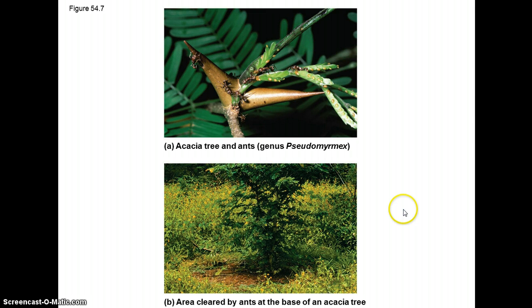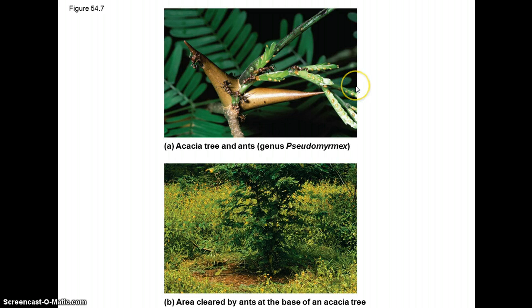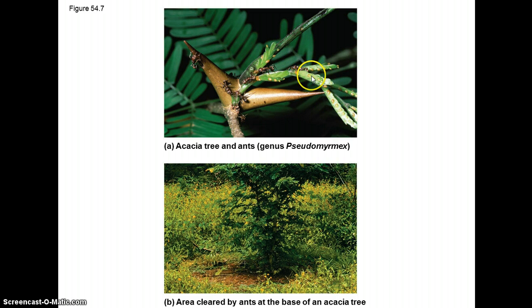Here's a good example of a mutualism. In Central America — studied extensively by Dan Janzen — this acacia plant, called the bullhorn acacia, has big horns on it, and small ants live on these shrubby trees. Janzen wondered what the relationship between the two was and how they benefit each other. The plant produces small food bodies — nutrient bodies on the leaves — that the ants eat. So the ants get both a home and food.